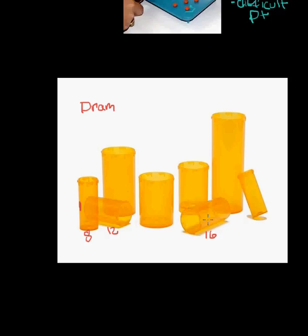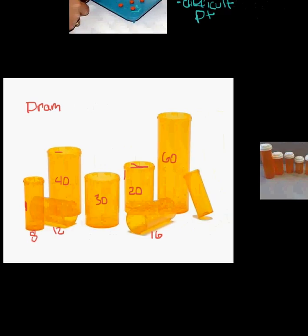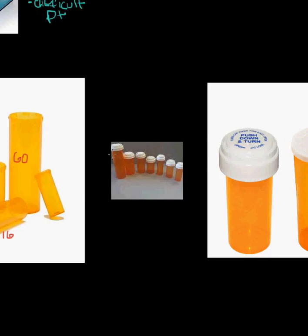Then we have some wider bottles, wider at the opening. This one right here is a 20 DRAM vial. Even wider still is a 30 DRAM vial, about the same width is the 40 but it's just taller, and then the tallest is a 60 DRAM. You may see these when you're on the ordering system, because you have to make sure you're stocked on these. You'll be able to fill the vial bins to make sure you have enough bottles for prescriptions.